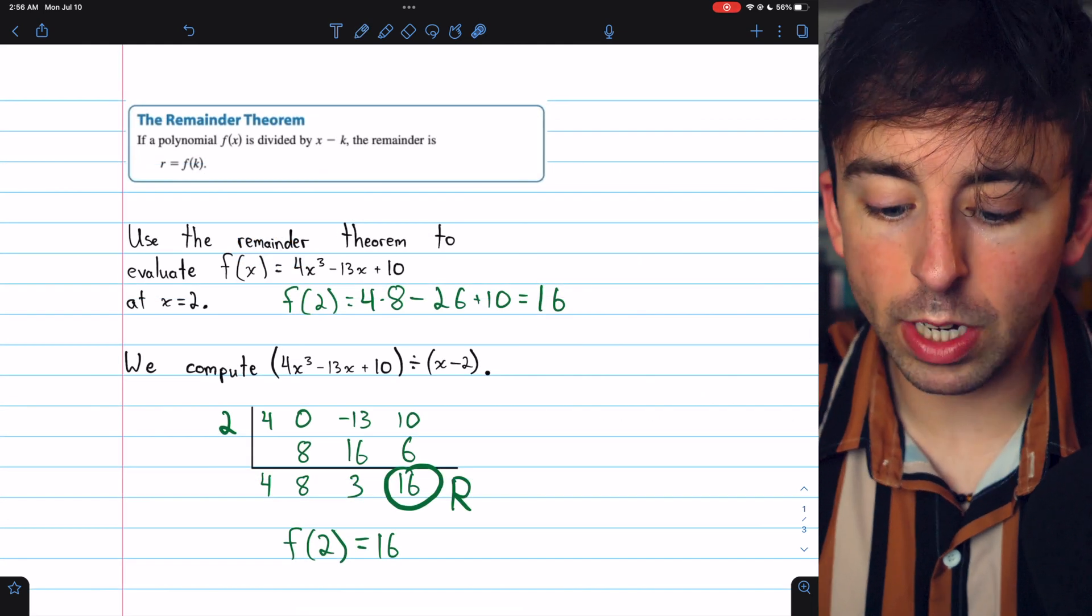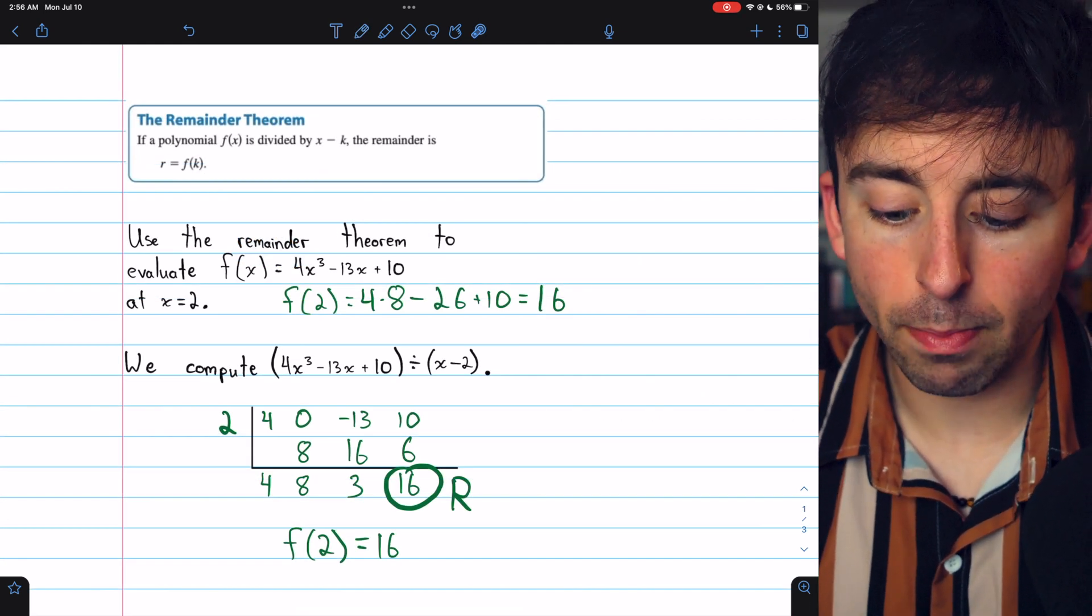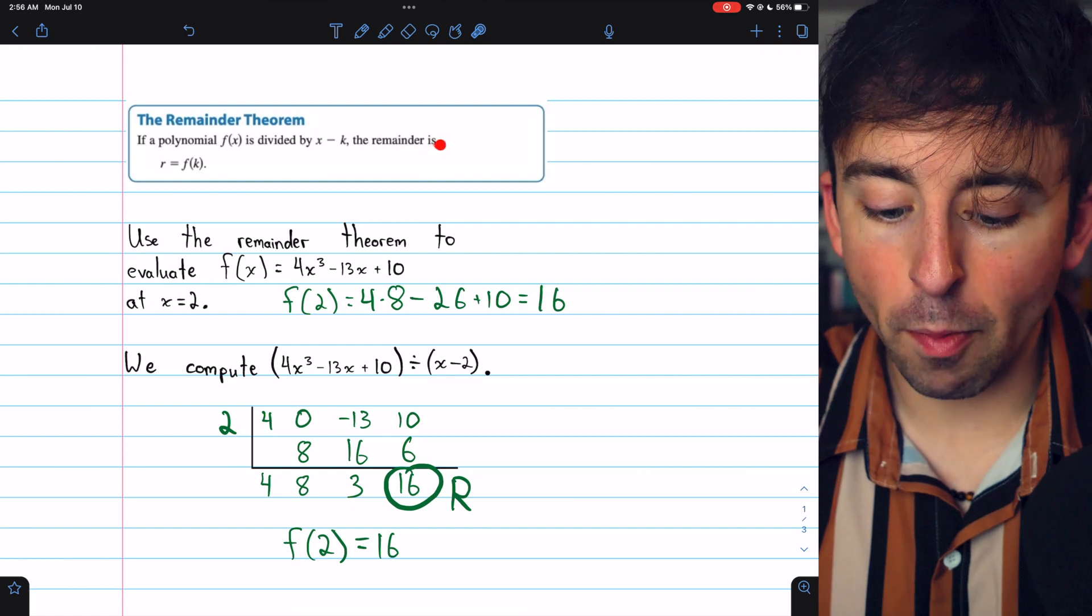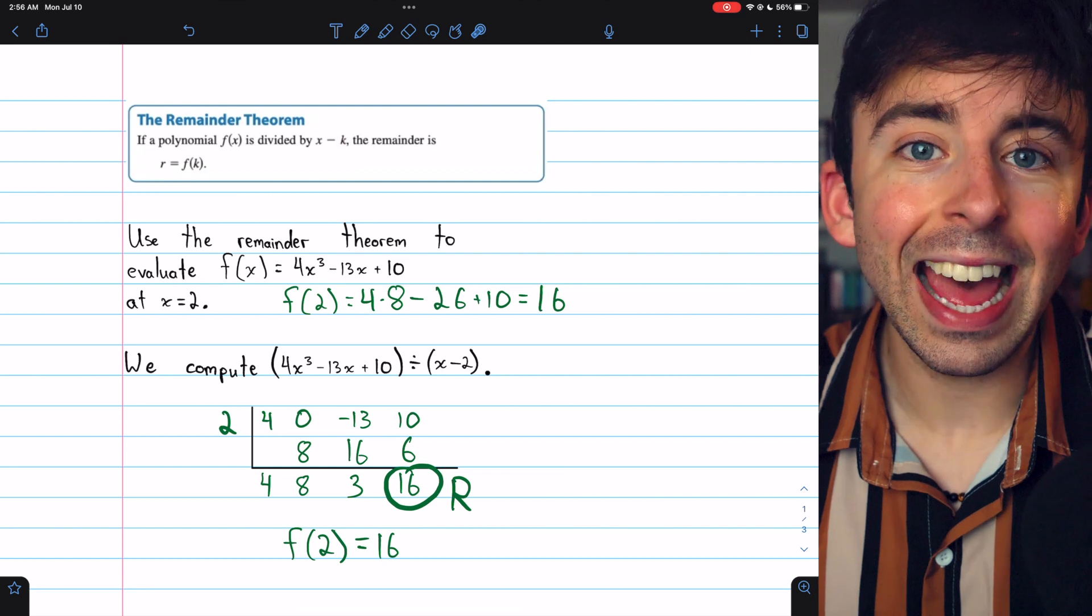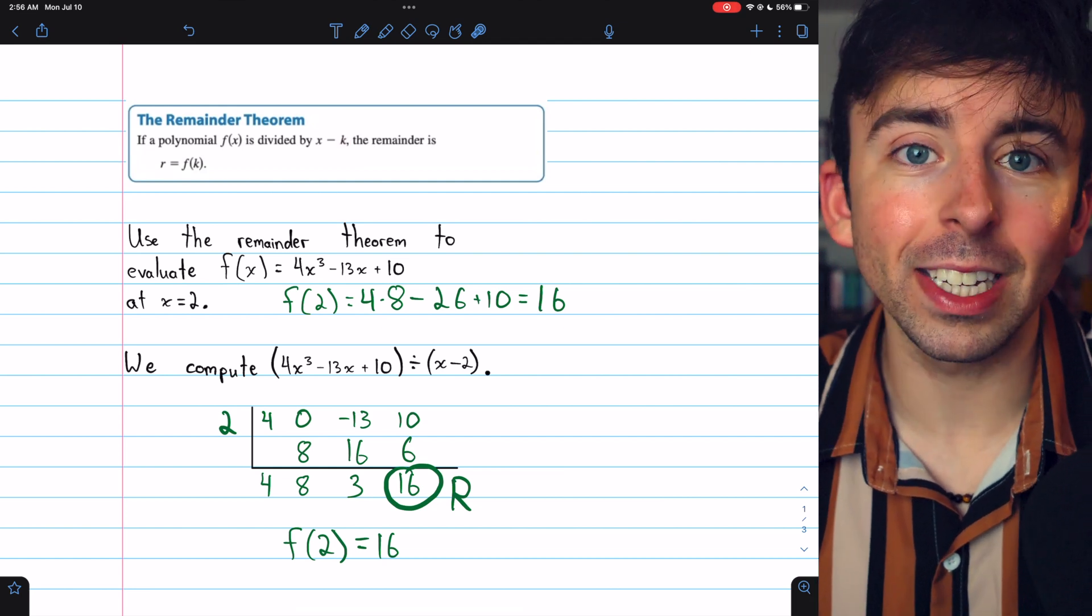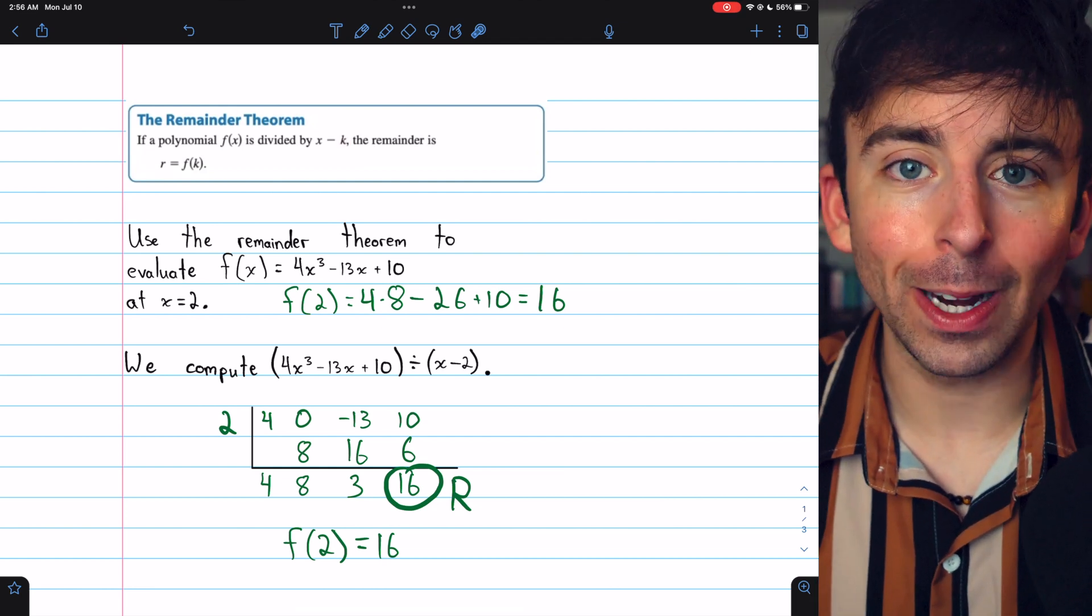So that's the remainder theorem. If we divide a polynomial f(x) by x minus k, then the remainder is actually f(k). The value of the function evaluated at k, which is particularly interesting in the case where the remainder is 0.